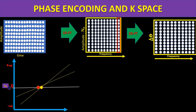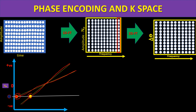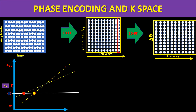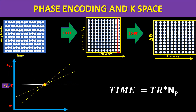If I give a phase gradient of a certain amount and then a second phase gradient of a different amount, I see a corresponding change in amplitude. As I apply greater and greater phase gradients, the amplitude contributed at each step will be different. The number of times I have to repeat this step is determined by the number of phase gradient steps required.